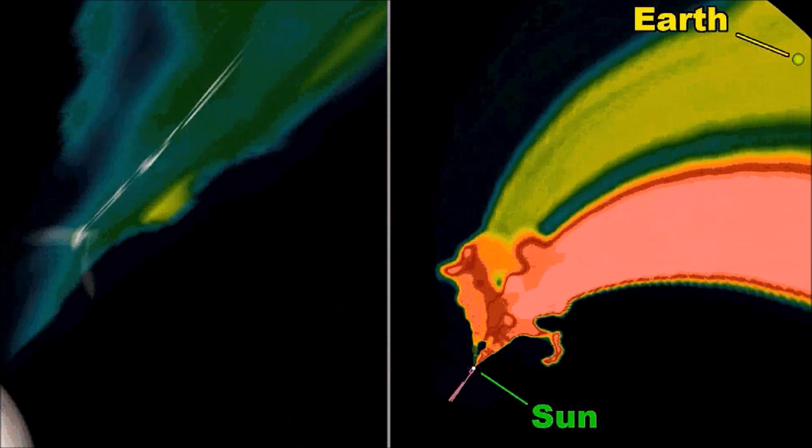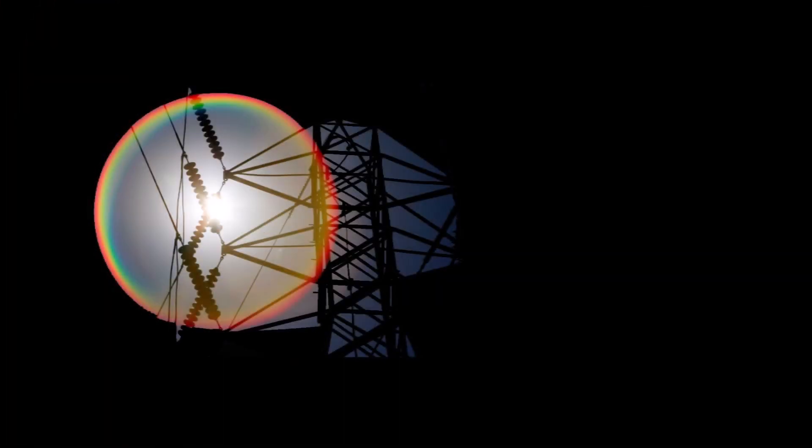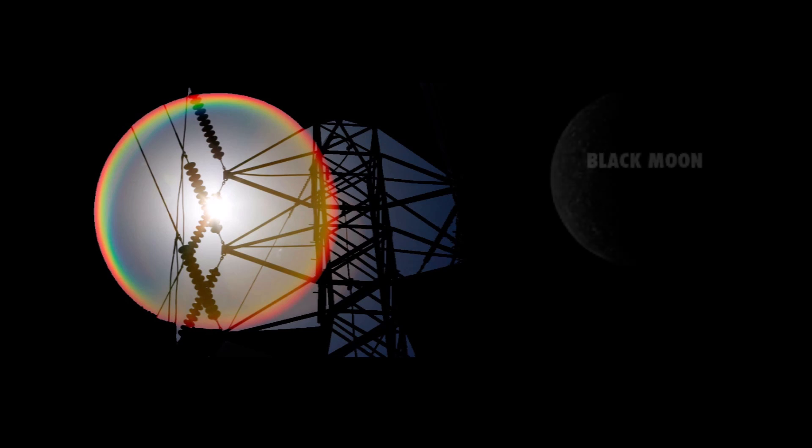Even so, power companies are preparing their grids in the event of a Carrington-like catastrophe, an event that in today's modern world would have dire consequences for civilization.